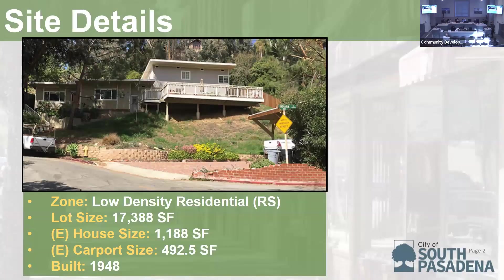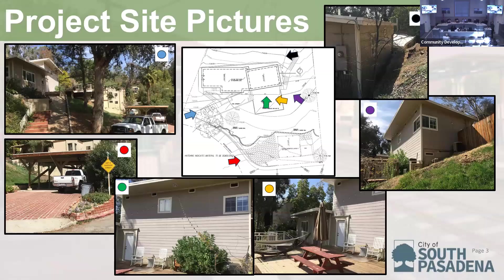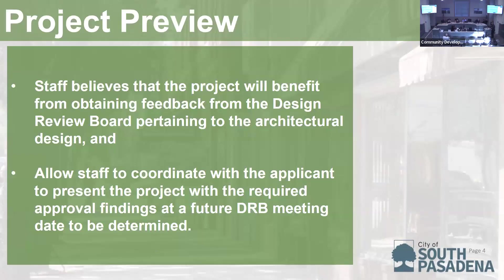The property is located in the low density residential, also known as RS zone, and was developed in 1948 with a 1,180 square foot structure. The total lot size is 17,388 square feet. There is an existing carport located at the bottom of the hillside facing Indiana Avenue, right at the corner of Indiana Avenue and Indiana Place. Here we have some pictures of the existing property — you can reference the color arrows to understand where each picture was taken.